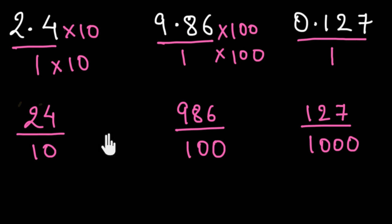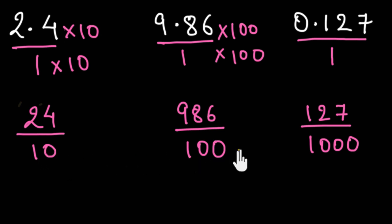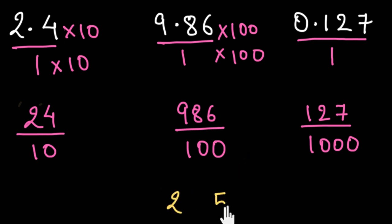You can definitely convert this into its simplest form, but at least one of the forms of its rational number would always have a 10 or a power of 10 in the denominator. Now, how is that related to having 2s and 5s in the denominator? Well, let's see.